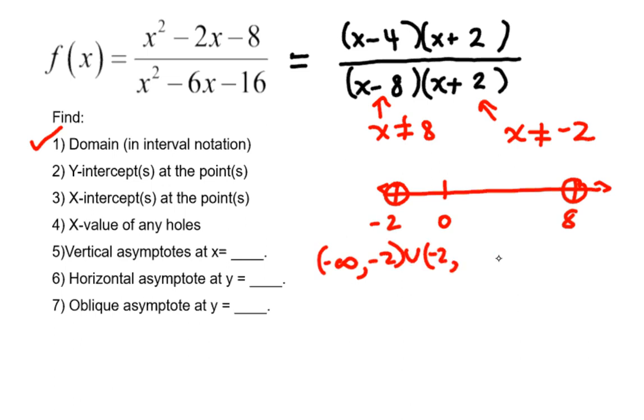union, starting at negative 2 again on the other side, going up to 8, and then union 8 towards positive infinity. So that's the answer to our part 1 answer.